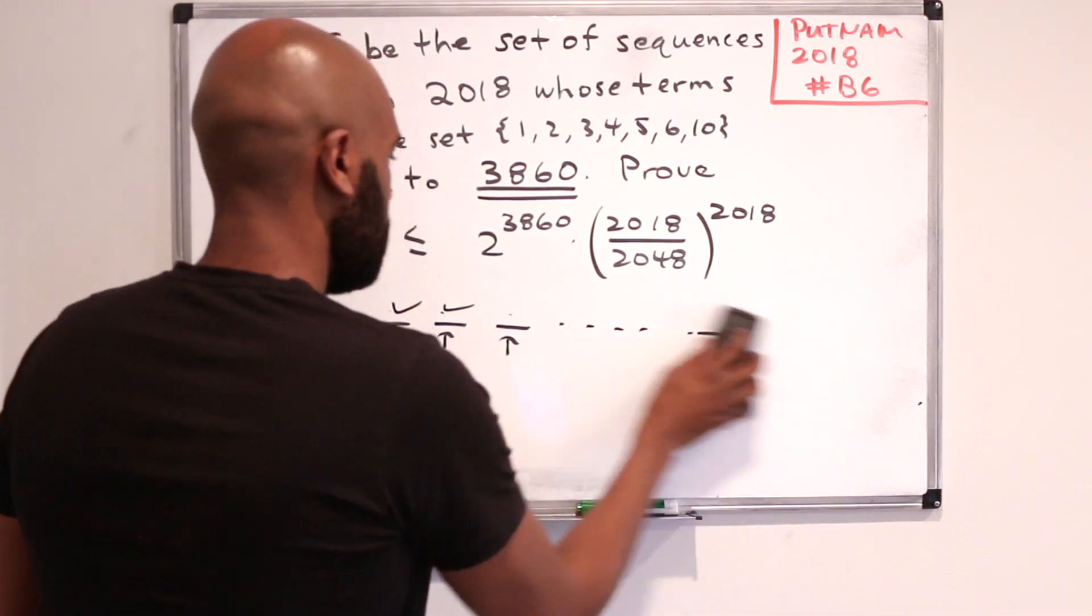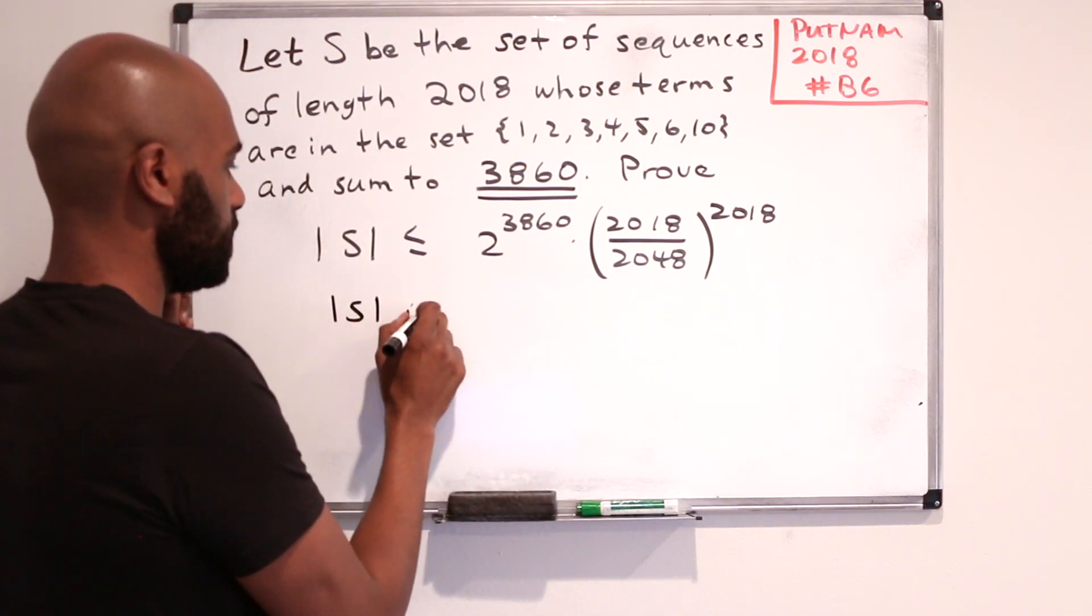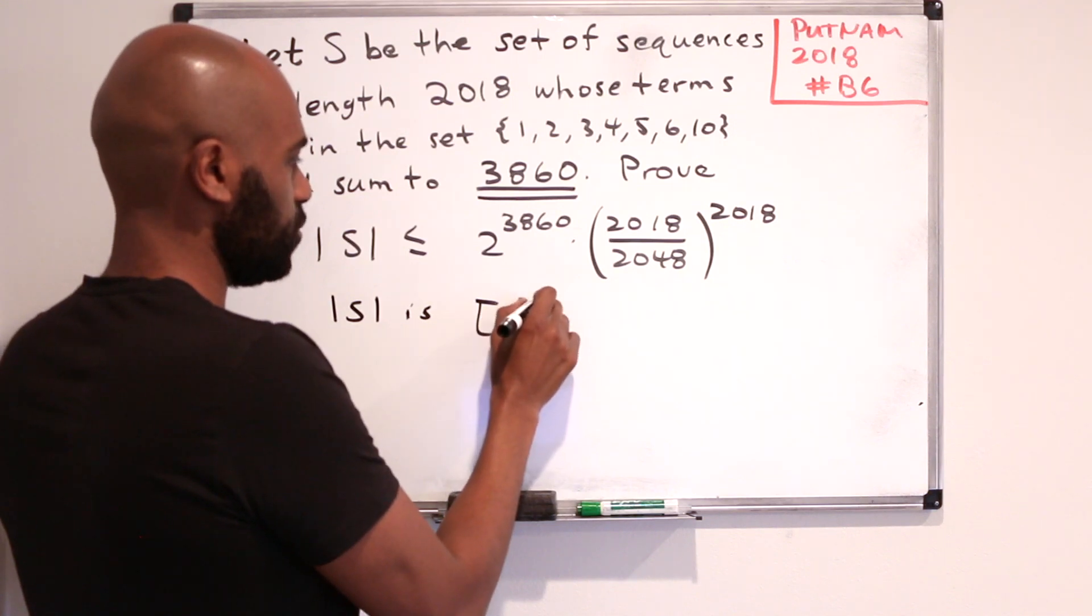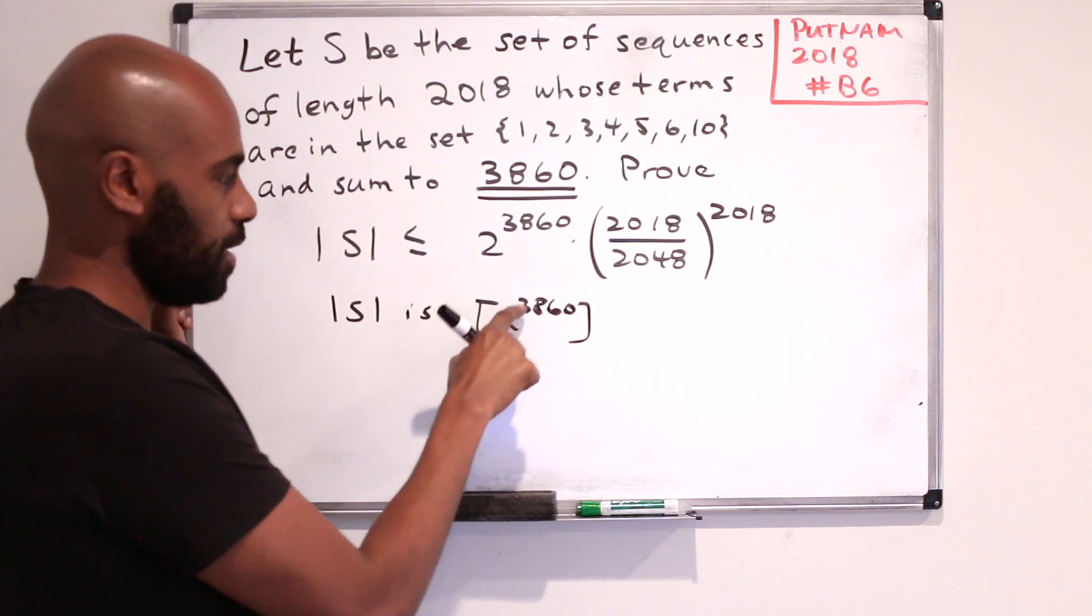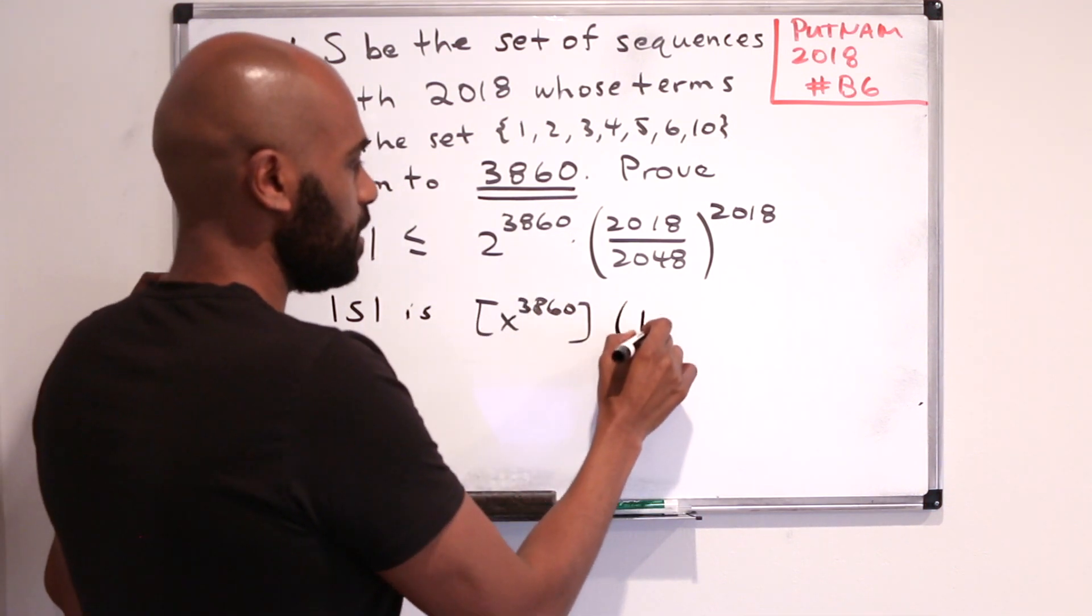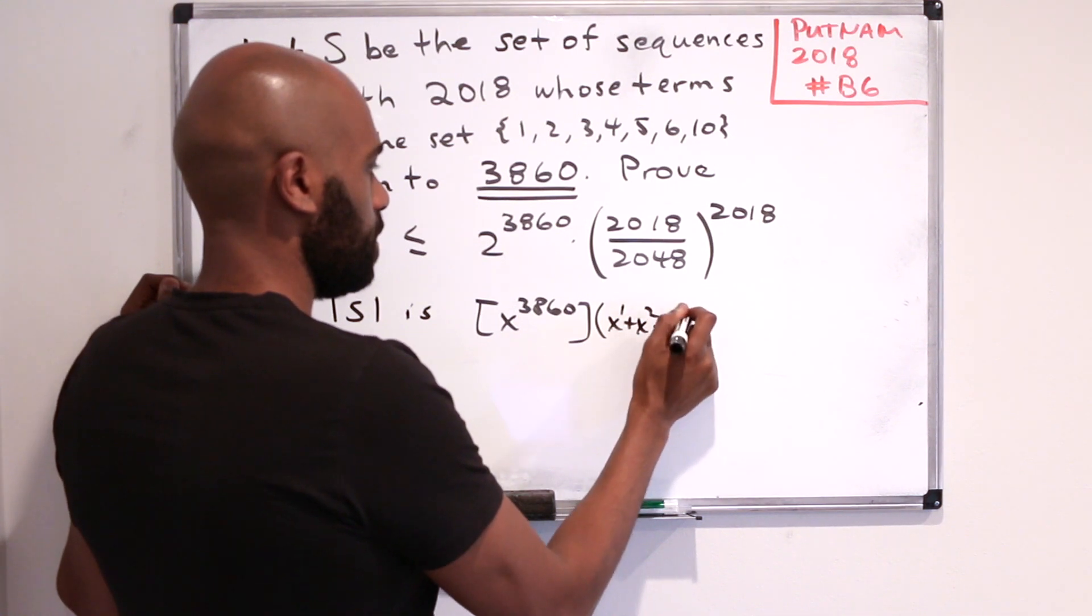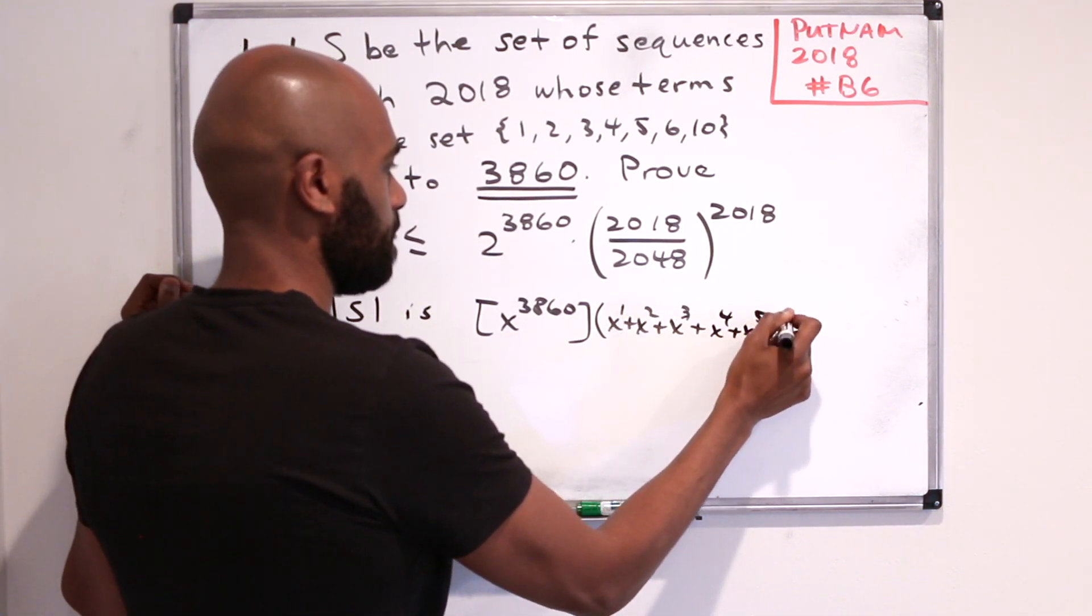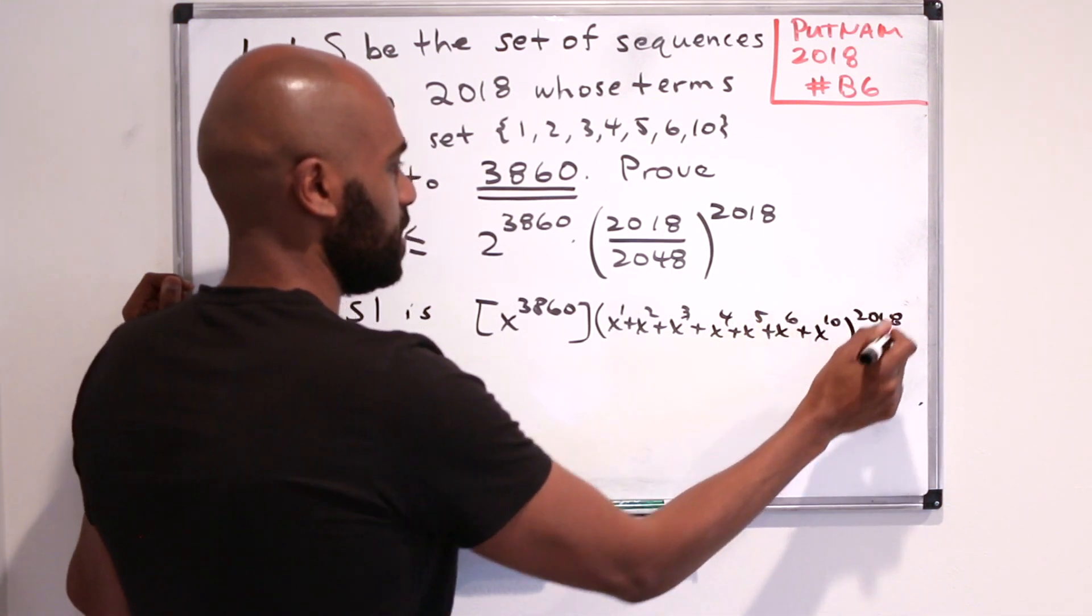So we'll write this down then, that the size of S is, I'll write it this way, the coefficient of 3860. This is sometimes notation used for the coefficient of a monomial. In x to the 1, x to the 2, x to the 3, x to the 4, x to the 5, x to the 6, plus x to the 10, all raised to the 2018th power.